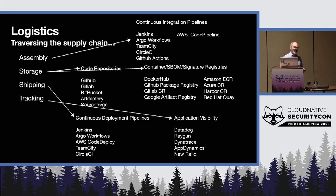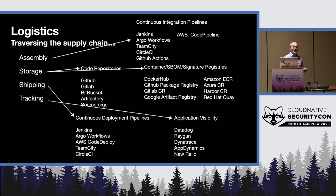Regularly scan your old builds and SBOMs for new vulnerabilities — there's a gap in the way we handle SBOMs after they're created; we don't want them to just sit there and gather dust. New vulnerabilities are discovered all the time, so old SBOMs can reveal new vulnerabilities. Scan your software before you deploy it. Use an admission controller to deny untrusted containers. Ensure you have a way to know what's running and where, and keep a record of what you deployed and what version so you can find it quickly if needed.